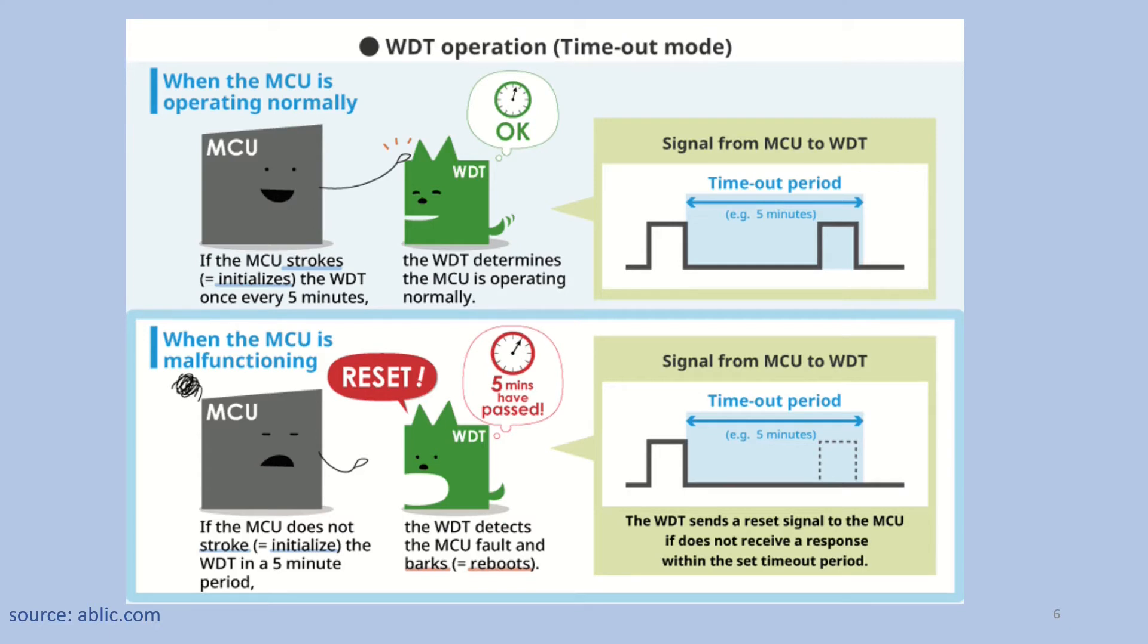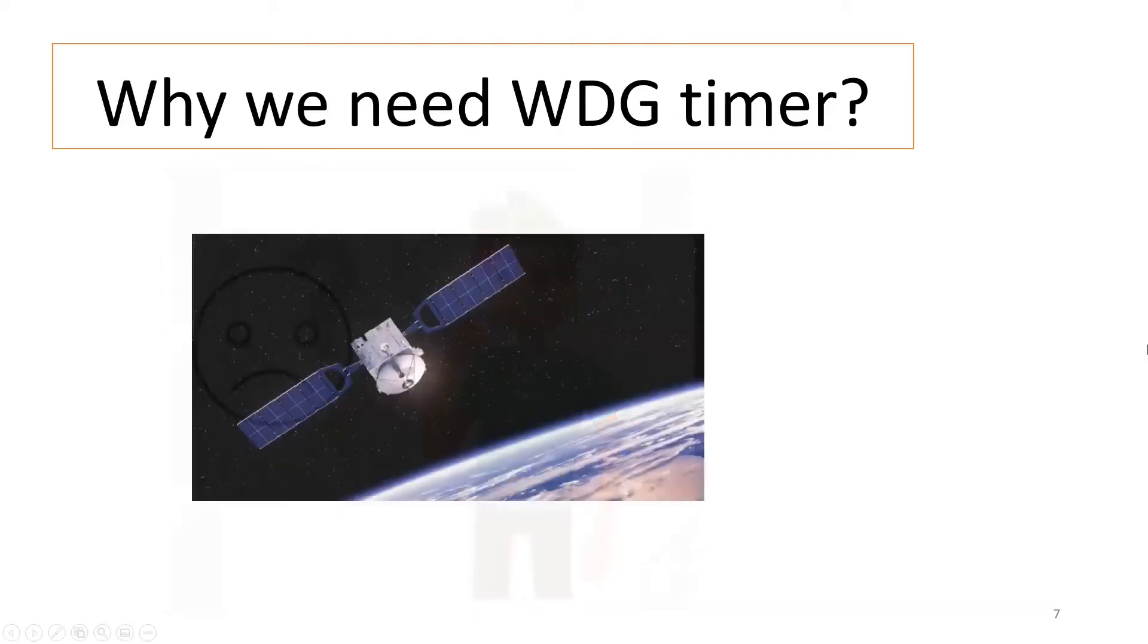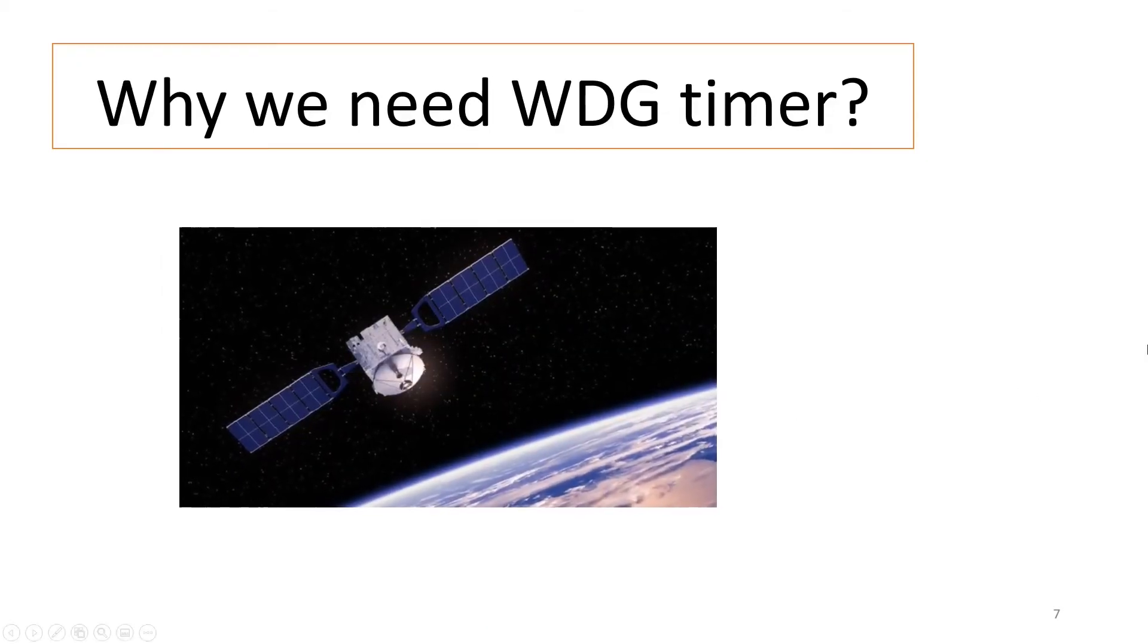As we all know, embedded systems behavior are static and deterministic. The majority of the functionality is dominated by periodic tasks and interrupts, with a few event-based tasks. When system behavior moves away from normal due to a failure condition, for example when program execution is stuck in an infinite loop, to handle such scenarios we have a solution called watchdog.